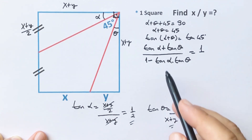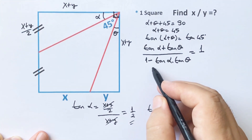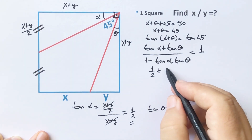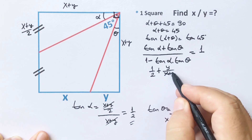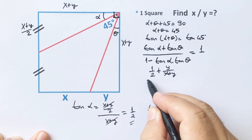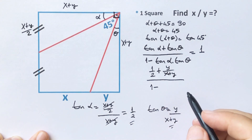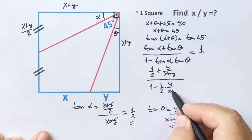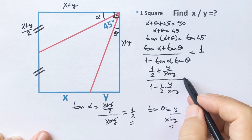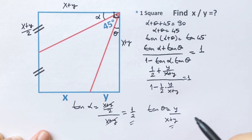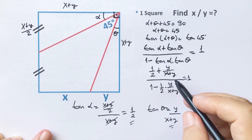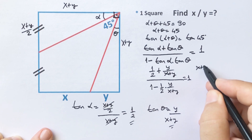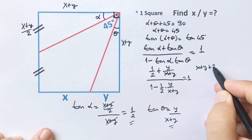Let's plug in these values into the equation: one half plus y/(x + y), over one minus one half times y/(x + y), equals one. Then let's equalize the numerator and denominator.